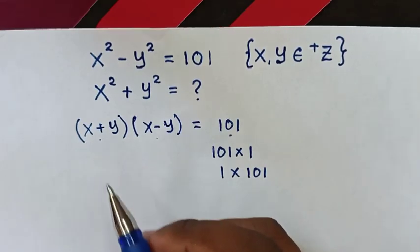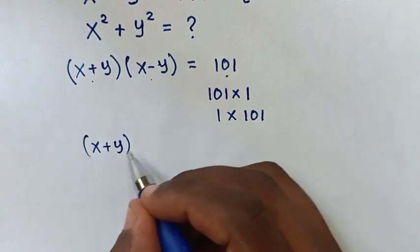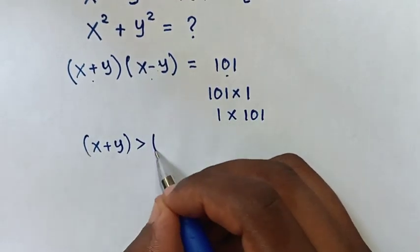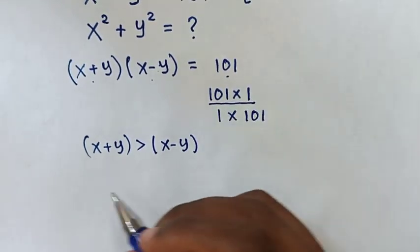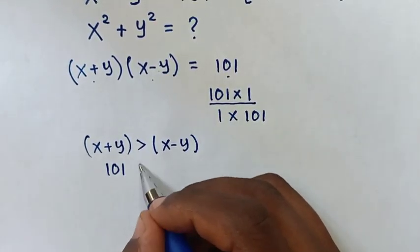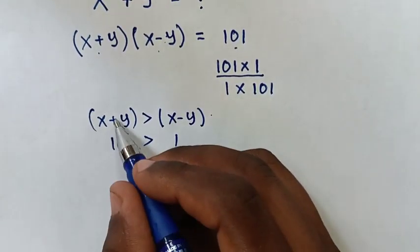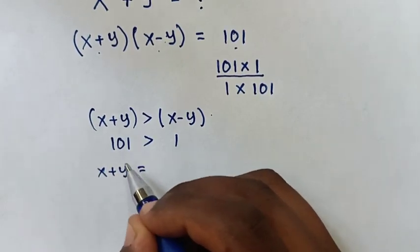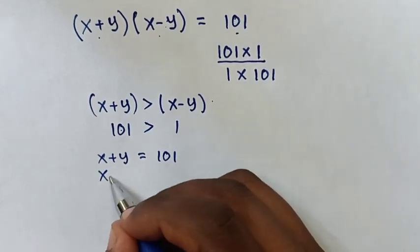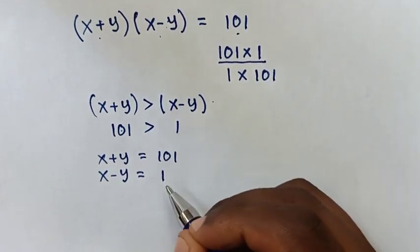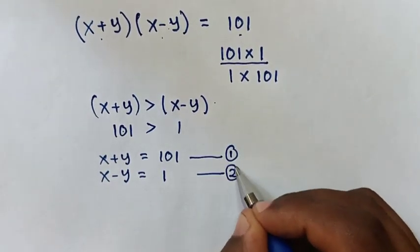Since x plus y will always be greater than x minus y, we compare: x plus y equals 101, and x minus y equals 1. We call these equation 1 and equation 2 respectively.